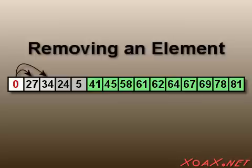0 has two children, 27 and 34. Since 0 is smaller than the larger of its children, we swap it with its larger child, which is 34.